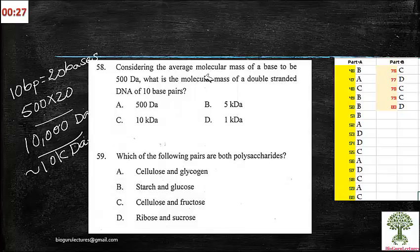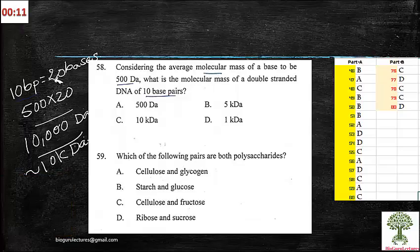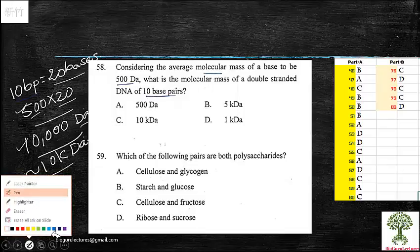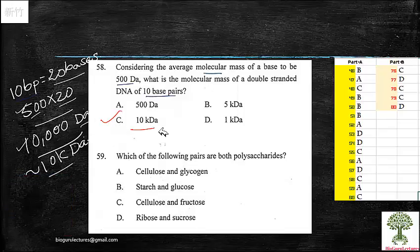Considering average biomolecular mass of a base to be 500 Daltons, what is the molecular mass of a double-stranded DNA of 10 base pairs? When you say 10 base pairs, you can write that in other way like 20 bases. We have 20 bases and the molecular mass of the single base is 500 Daltons. When you calculate the same one for 20 bases, you will get the value of 10,000 Daltons. So this 10,000 Daltons goes into 10K Daltons.